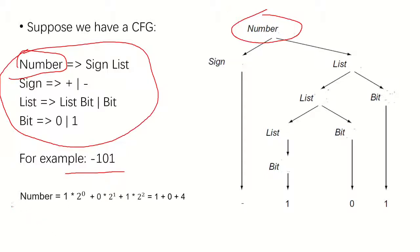Just according to this formula, convert the binary representation to a decimal number. For this number, this one is at position zero, so we have one times two to the zero. And this bit is at position one, so we have two to the one. And this bit is at position two, so we have two to the two.